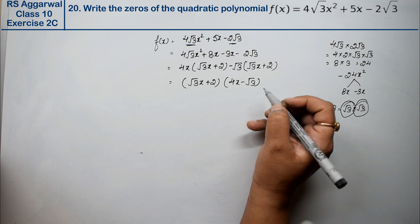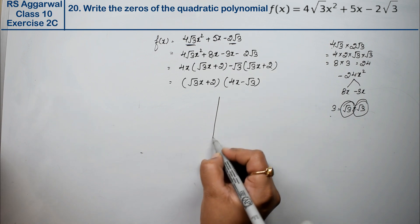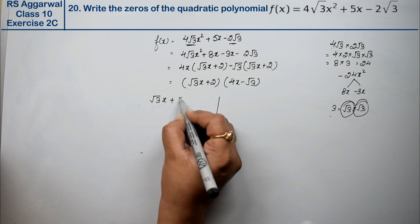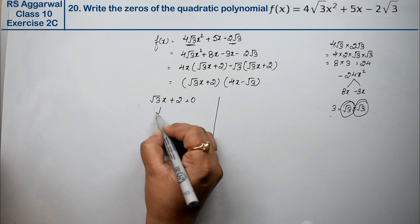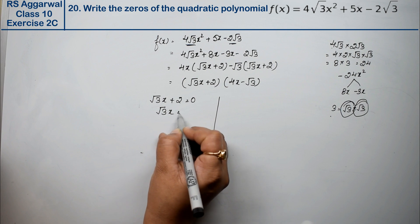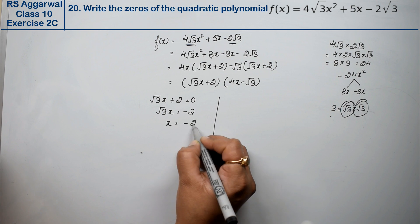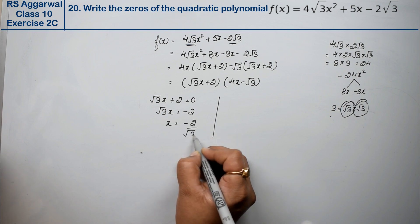Now we can find the zeros. We set both factors equal to zero. So √3x + 2 = 0. Then √3x equals what? This comes to the other side, so it becomes -2. So the value of x is -2/√3.